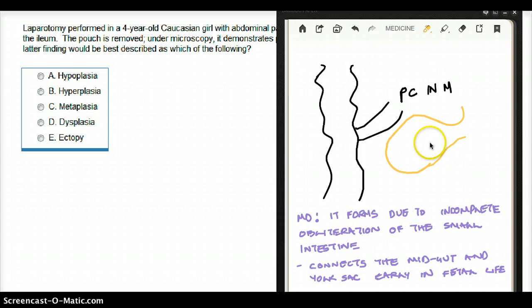The yolk sac is connected to the midgut inside the body. This duct connecting the yolk sac to the midgut of the fetus is the omphalomesenteric duct.